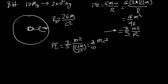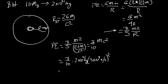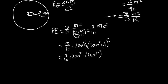Plugging in the numbers: 3 over 10 times 2 times 10 to the 31 kilograms times c squared, where c squared is 9 times 10 to the 16. So 3 times 2 times 9 is 54, divided by 10 is about 5. This gives approximately 5 times 10 to the 47 joules.